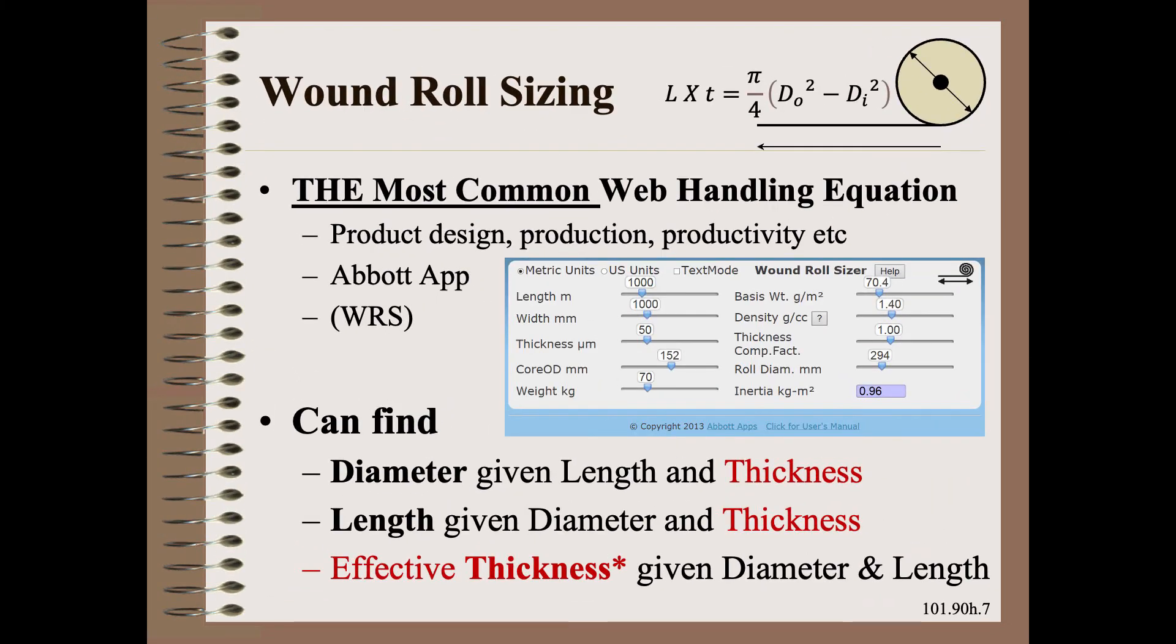With these concepts and definitions, we are now ready to evaluate web handling models. We will begin with the most common web handling equation. That is the one where you can calculate wound roll diameter given length and thickness, or wound roll length given diameter and thickness, and more.